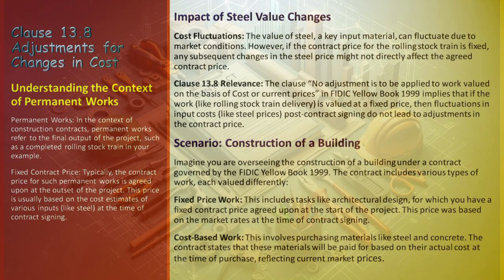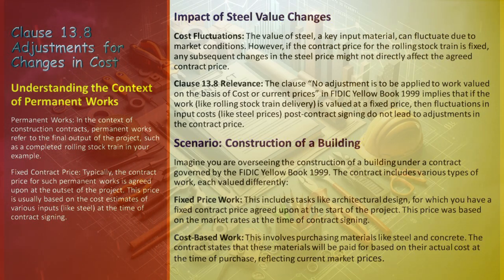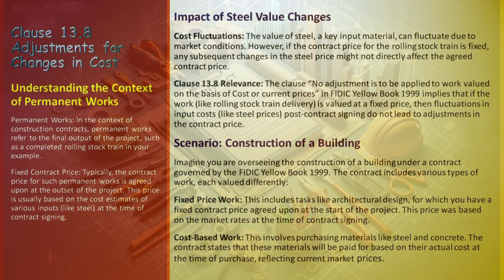According to Clause 13.8, no adjustment is to be applied to work valued on the basis of cost or current prices in the FIDIC Yellow Book 1999. If the work — for example, rolling stock train delivery — is valued at a fixed price, then input cost fluctuations like steel prices after contract signing don't lead to adjustments. Imagine a contract to deliver a rolling stock train at a fixed price of $10 million, determined based on steel prices at the time of contract signing. Suppose the market price of steel increases significantly midway through the project — despite this rise, the contract price remains at $10 million, and the increased cost of steel does not trigger an adjustment in the fixed contract price.